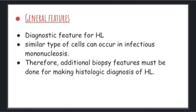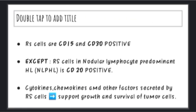A similar type of cell is also seen in infectious mononucleosis, therefore other clinical features must be considered for making a diagnosis of Hodgkin lymphoma. Generally, RS cells are CD15 and CD30 positive, but there is one exception: in nodular lymphocyte predominant Hodgkin lymphoma,